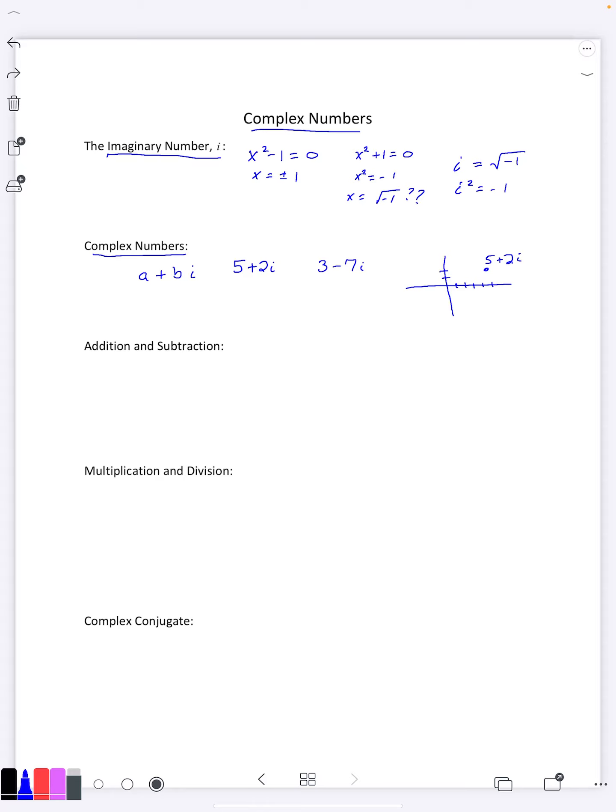And if I want 3 - 7i, I'd go right 3, down 7, and this would be 3 - 7i. And so once you start drawing things in this fashion, then this becomes what's called the real axis and this becomes the imaginary axis. And the number i is just this dot right here that's going up instead of going to the right. So you can think of imaginary numbers as just a 90 degree shift from the real numbers.